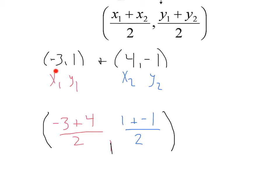Plugging all that in, I'm going to add my x's, negative 3 plus 4, divided by 2. I'm going to add my y's next, 1 plus negative 1, divided by 2.